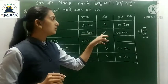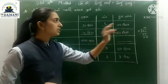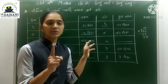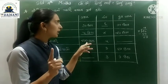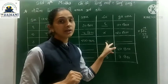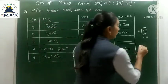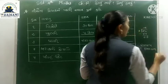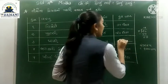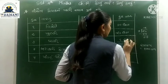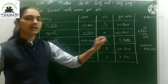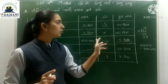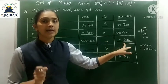5 કિલોગ્રામ ની 1 ખુરશી, 4 ખુરશી હોય તો ટોટલ 20 કિલોગ્રામ વજન થાય. થાળી — 1 થાળી નું વજન 200 ગ્રામ. 1000 ગ્રામ એટલે 1 કિલોગ્રામ. 200 ગ્રામ ની 1 થાળી, આવી 5 થાળી, તો ટોટલ 1 કિલોગ્રામ.